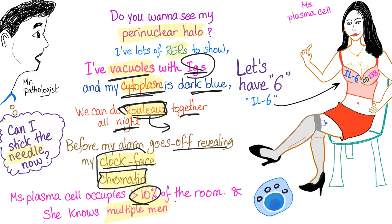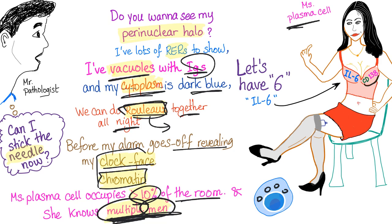Plasma cell occupies 10% of the room. That's why Ms. Plasma Cell probably knows multiple men — multiple myeloma. So when you have lots of plasma cells, this is multiple myeloma. Also important: interleukin-6 is involved in the pathogenesis of multiple myeloma, and cluster differentiation 138 (CD138) is also found in multiple myeloma.